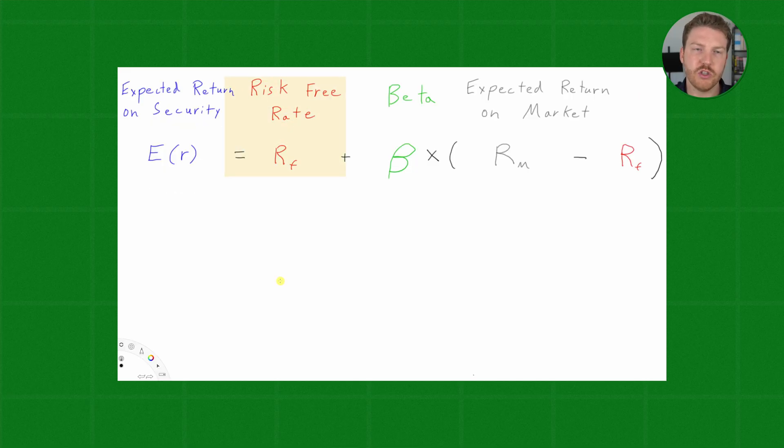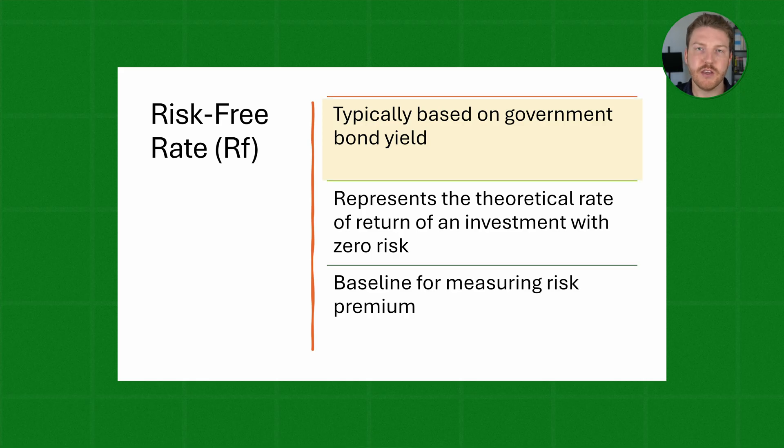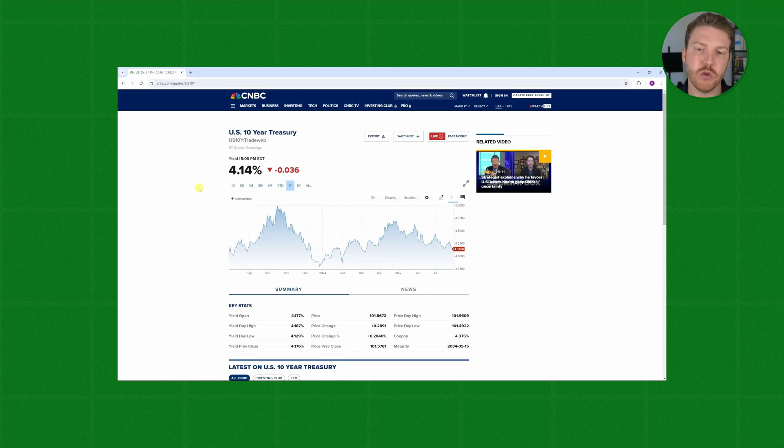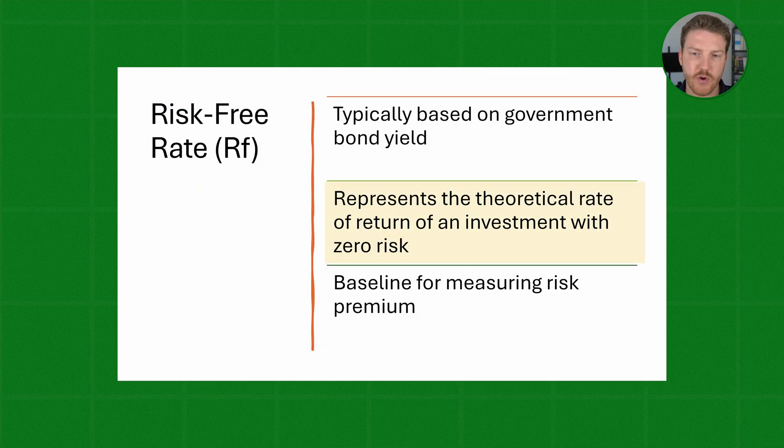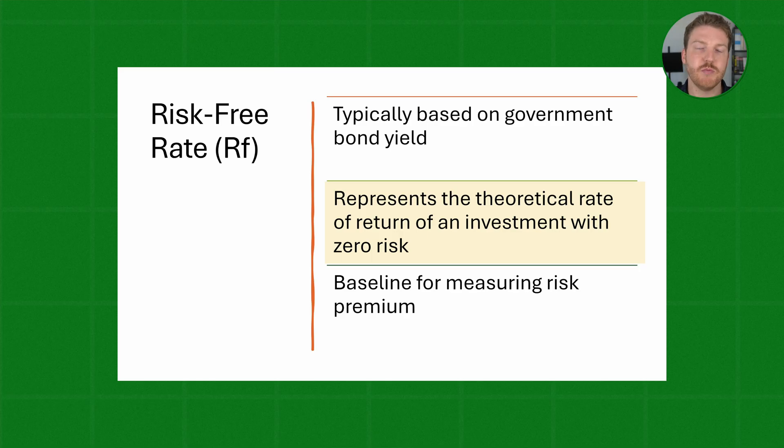The next variable in our equation is the risk-free rate denoted as Rf. In the field of finance, the risk-free rate is typically based on a government bond yield, and the most common example would be a U.S. treasury, and that's what we'll use in this video. The risk-free rate represents the theoretical rate of return of an investment with zero risk, and it is the baseline for measuring the risk premium, which we will measure later on in this video.